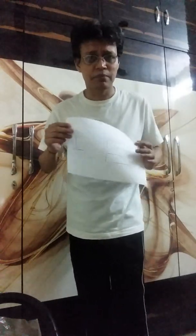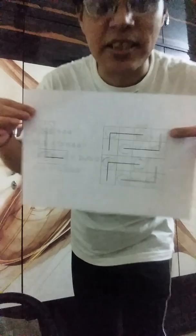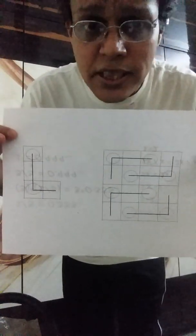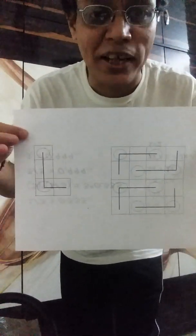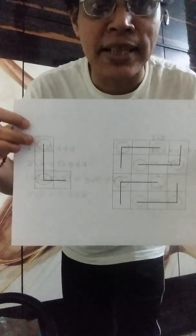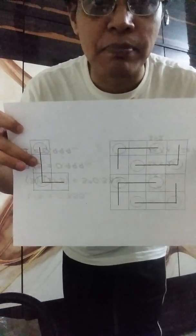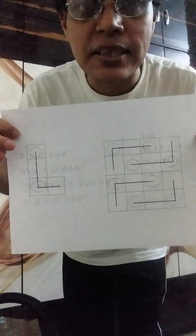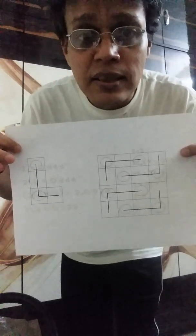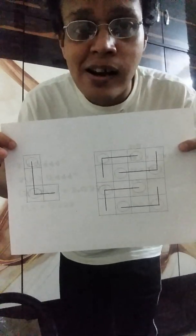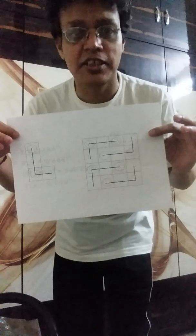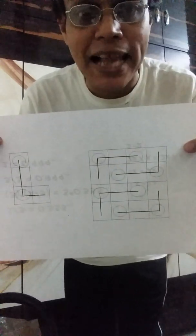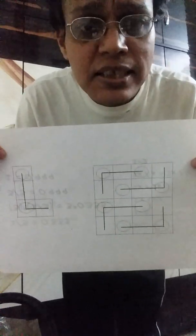I'm giving you one small problem. Look at this diagram — there's an L-shape, and we're trying to fit this L-shape into 16 squares. You can see that exactly four L-shapes fit into the 16 squares. It's easy to solve, right?